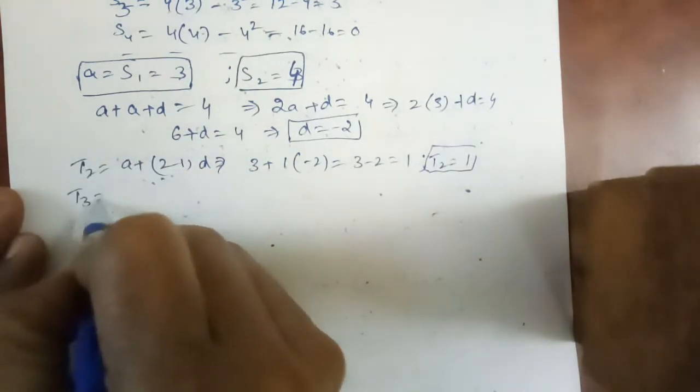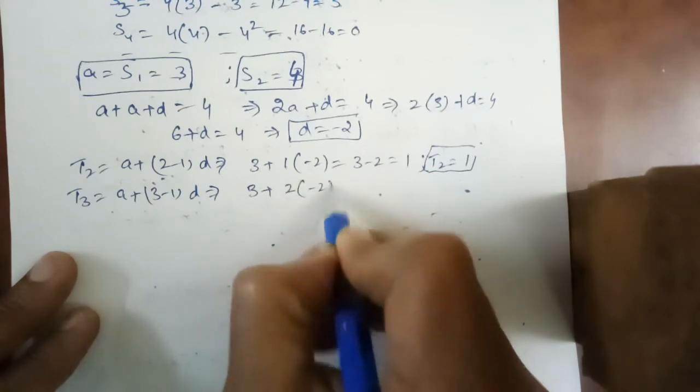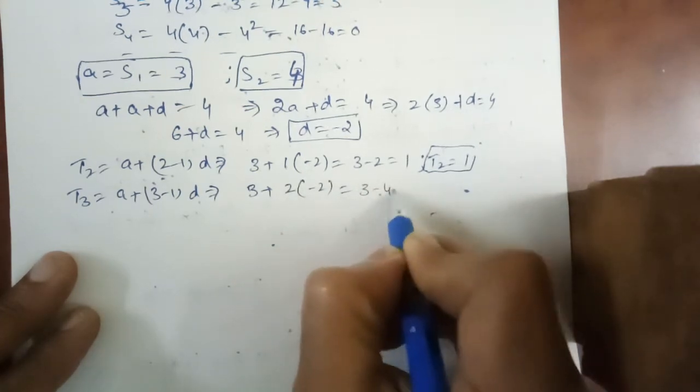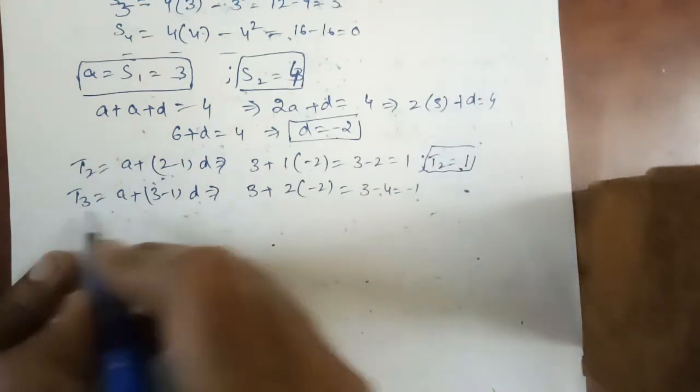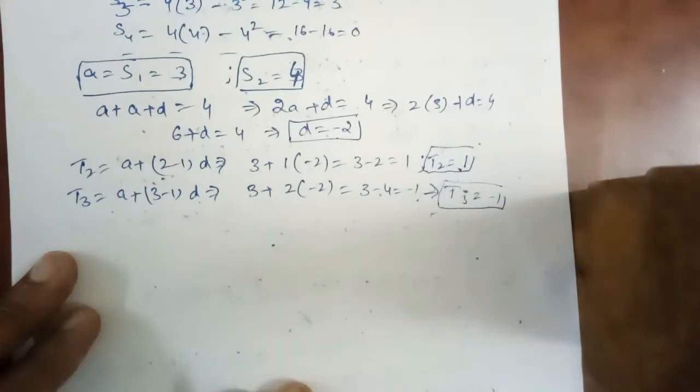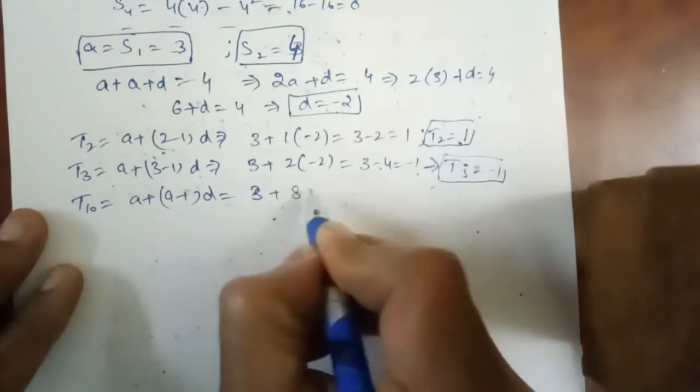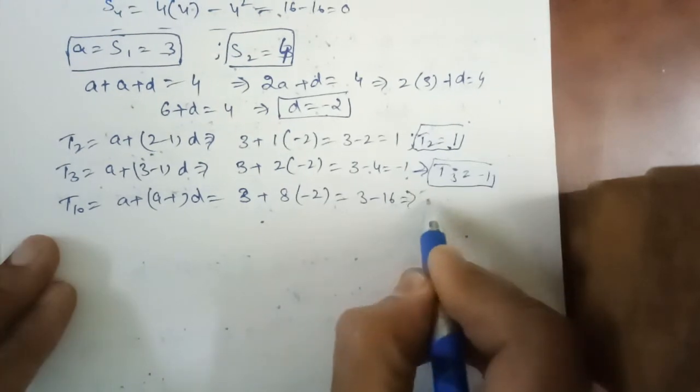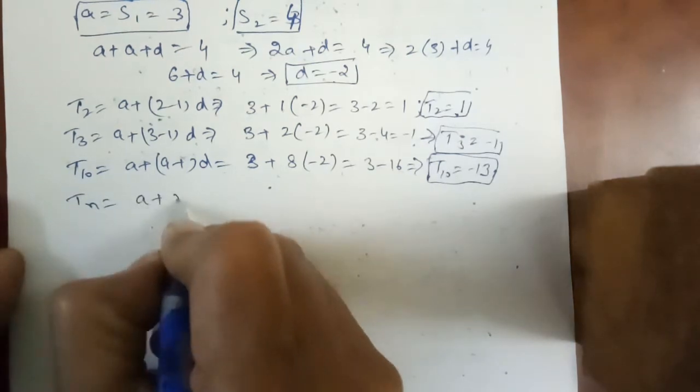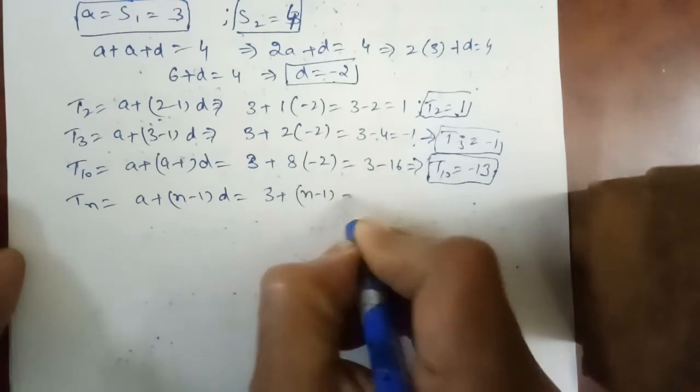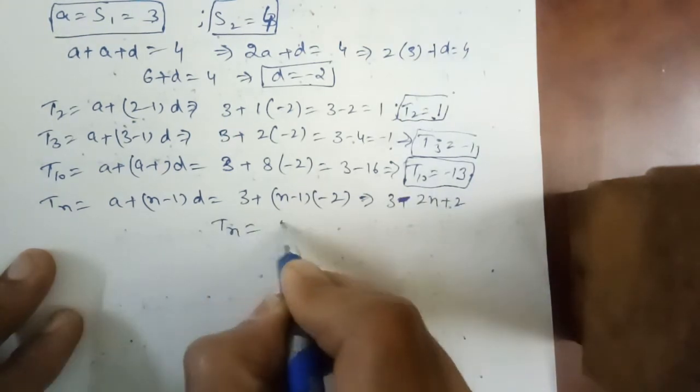Next we have to find third term T3: A plus 2 into D, that is 3 plus 2 into minus 2, that is 3 minus 4, which is minus 1. Next we have to find T10: A plus 9 into D, that is 3 plus 8 into minus 2, 3 minus 16, T10 is minus 13. And Tn: A plus n minus 1 into D, 3 plus n minus 1 into minus 2, that is 3 minus 2n plus 2. Tn is 5 minus 2n.